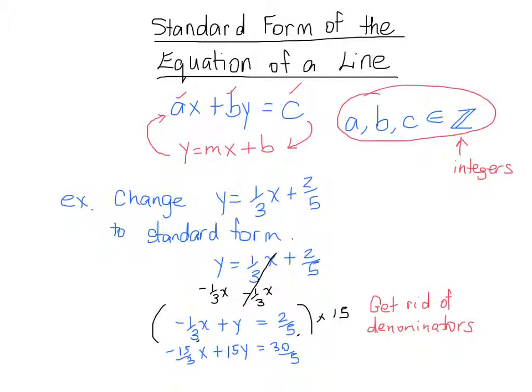So, we're almost there. We're actually right there. We can just simplify that a little bit further. Negative 15 over 3 is actually negative 5x plus 15y. It stays 15y. Equals 6. And now, our answer or equation is in standard form.